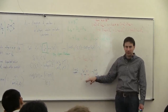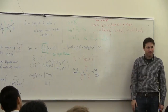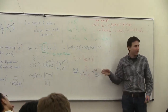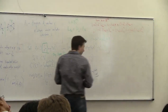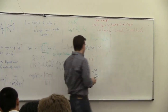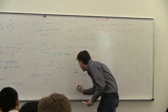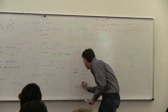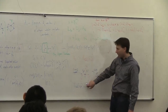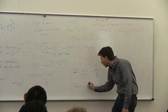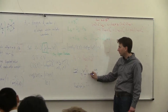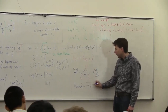Does anyone remember how to calculate the effective resistance of u-v? The current can go in parallel. The current can go directly — resistance of one — or it can go through a, which has a resistance of two. So the effective resistance of u-v is 1 over (1 + 1/2), which gives two-thirds.